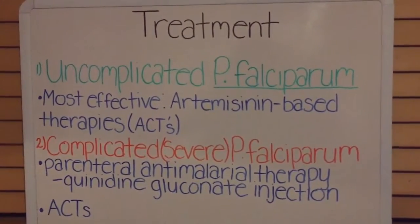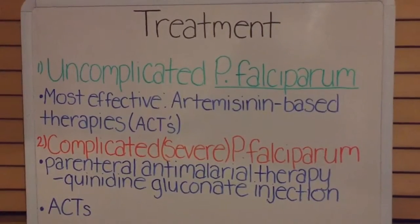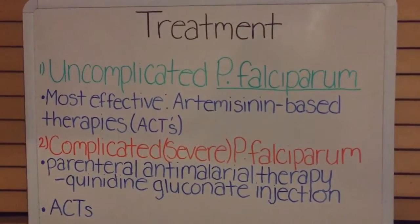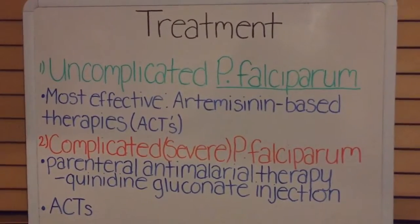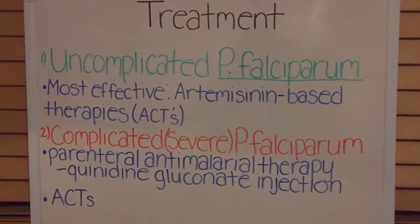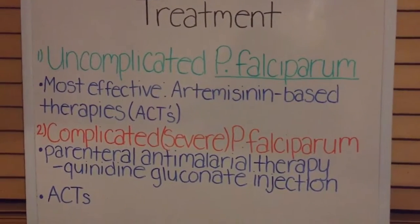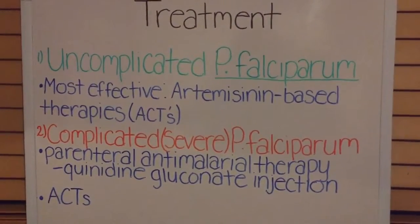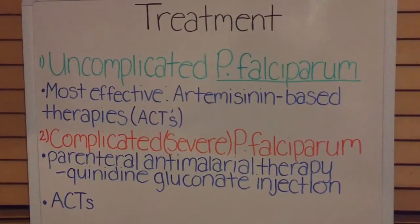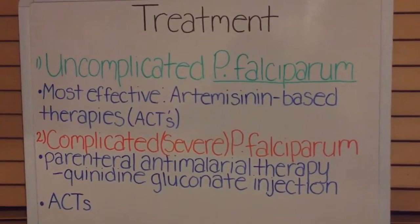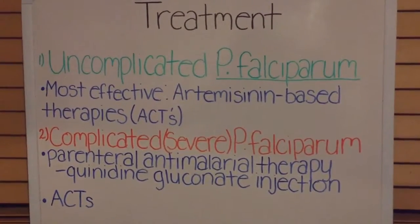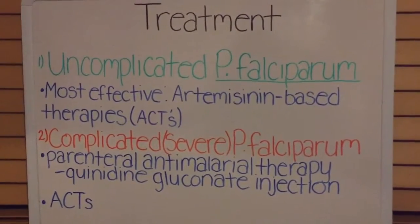How this works is that during the first three days of treatment, the artemisinin compound reduces the number of parasites while the partner drug eliminates the remaining parasites. Severe P. falciparum treatment requires a parenteral antimalarial therapy such as quinidine gluconate injection, which is given to the patient first to reduce the parasite, then ACTs is given to kill the remainder of the parasites.